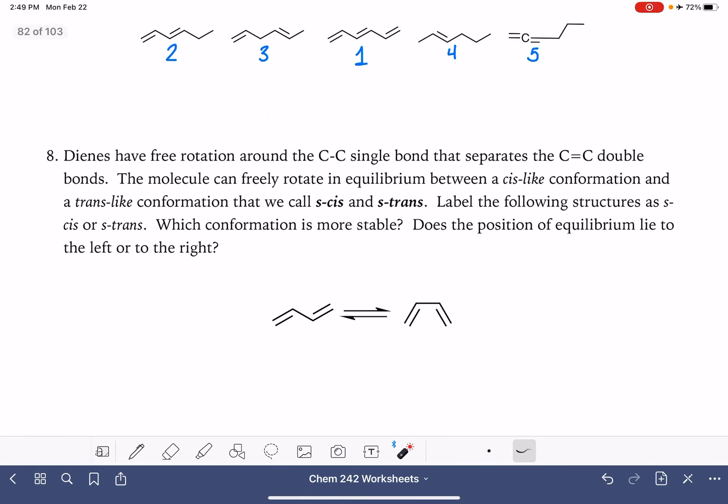Last but not least, S-cis and S-trans. S-cis and S-trans are terms that we use to describe the conformation of a diene. Conformation just means shape. So this is a shape that's achieved by free rotation around a single bond. So this is not like an isomer. This isn't like cis or trans isomer.